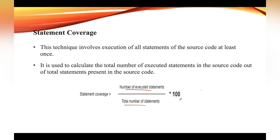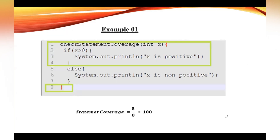Let us take this example. According to the given source code, when we give any value of x which is greater than zero, it will print the statement 'x is positive.' If the value is less than zero, it will print 'x is non-positive.' So let us take the value of x as 4. Since 4 is greater than zero, it will print 'x is positive.'